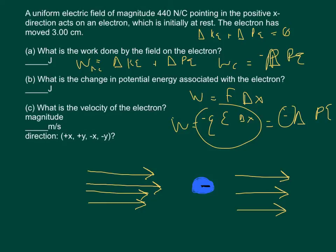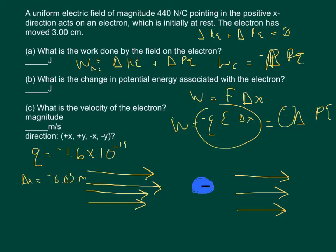For an electron, q equals negative 1.6 times 10 to the negative 19th coulombs. Delta x — the electron moves 3 centimeters, or 0.03 meters, but since it moves in the negative x direction, delta x equals negative 0.03 meters. The electric field is given as 440 newtons per coulomb. When you plug that into your calculator, the two negatives cancel, and you get positive 2.112 times 10 to the negative 18th joules.